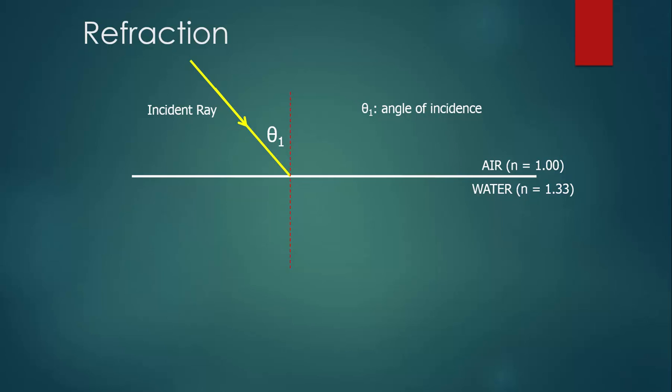Now we know that light slows down when it goes from air into water. This is going to mean that the refracted ray is going to bend toward the normal. That is, the angle of refraction is going to be smaller than the angle of incidence.